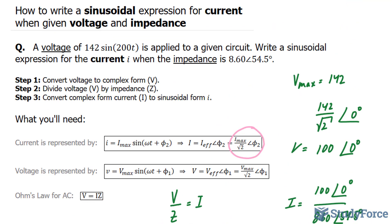And there you have it. That is how to write a sinusoidal expression for current when given voltage and impedance.